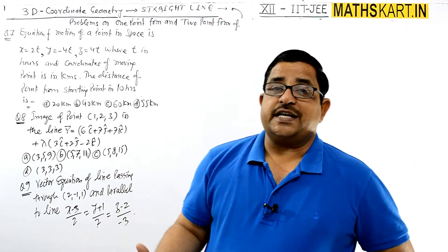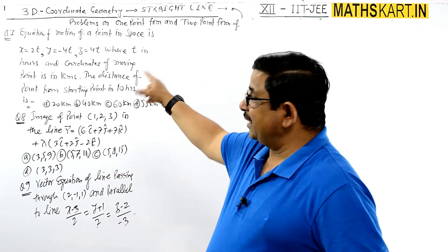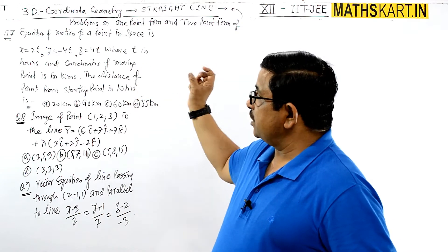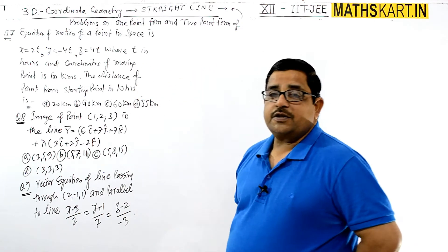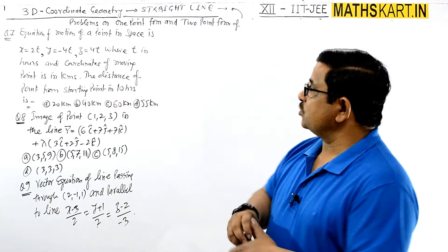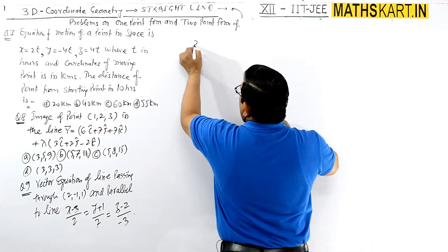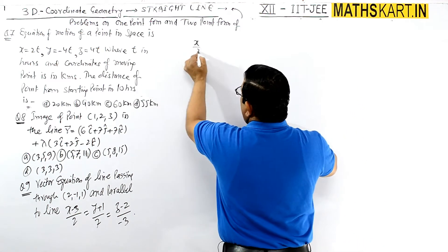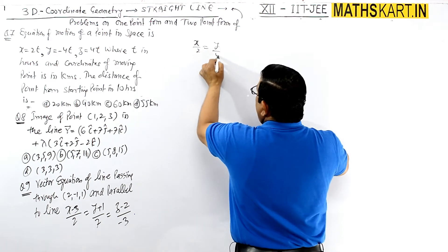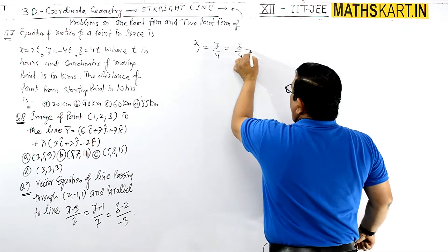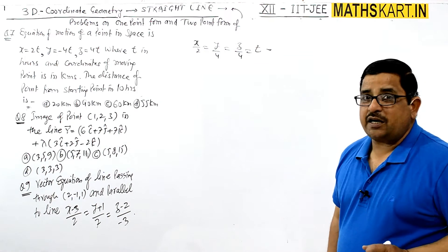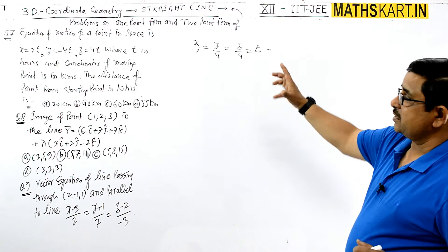The point is moving in space along a line according to x equals 2t, y equals minus 4t, z equals 4t. We can write this as x/2 equals y/4 equals z/4 equals t, where t is the parameter — the time variable. Placing any value of the parameter gives the coordinates.